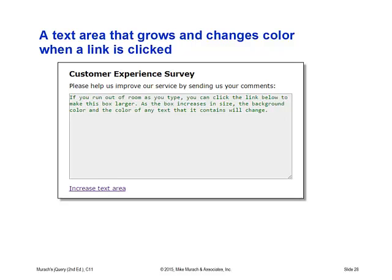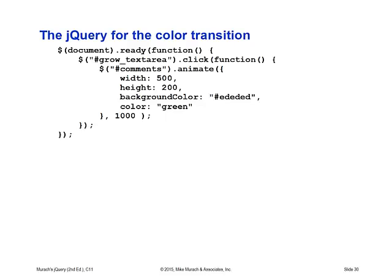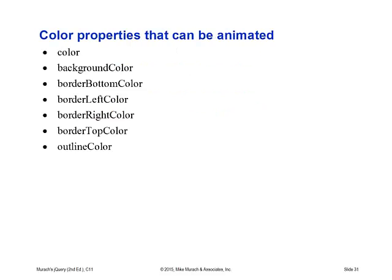A text area can grow and change color when a link is clicked. You can see the increased text area is no longer blue — it has a purple view, which means it's already been selected. That color change is basically a reminder to you, the user, that it's been previously selected. The HTML coding supports that box with a noted width and height, and adds the ability for that area to be increased for text. The jQuery gives some dimensions also associated with CSS parameters — height, background color, and so on. Properties included to make it more animated include background color, border color, left, right, and top.